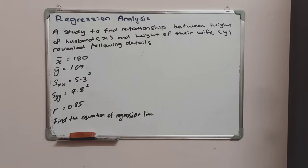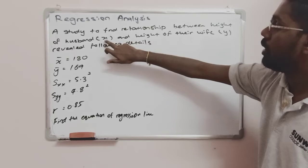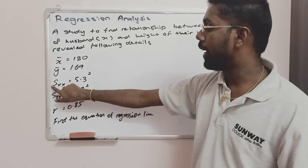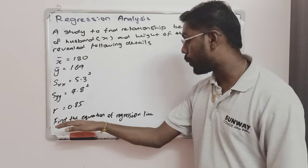Let's look at another example. A study to find the relationship between the height of a husband (x) and the height of their wife (y). The given details are: mean of x equals 180, mean of y equals 169, SXX equals 5.3 squared, SYY equals 4.48 squared, and R equals 0.85. We are asked to find the equation of the regression line.